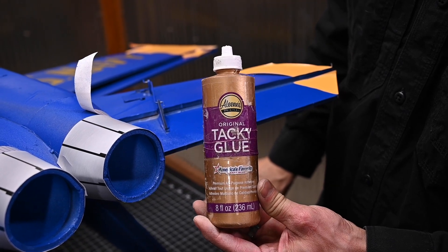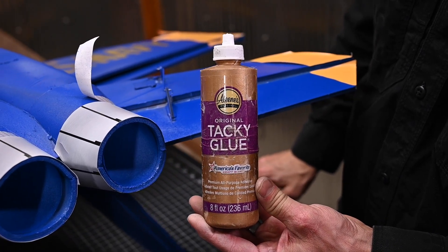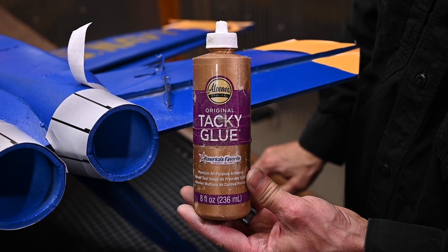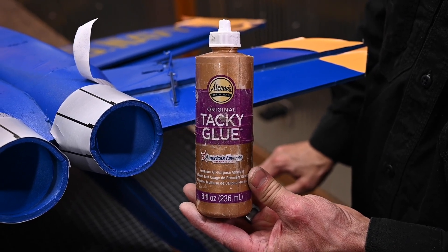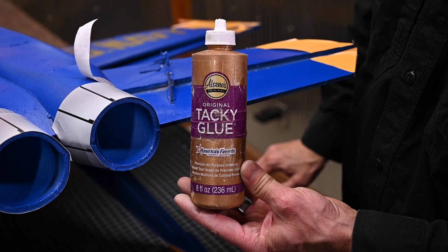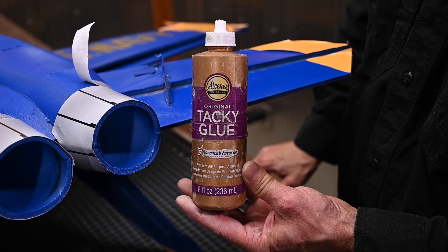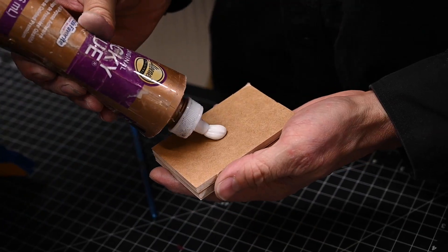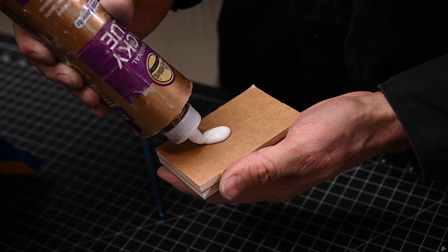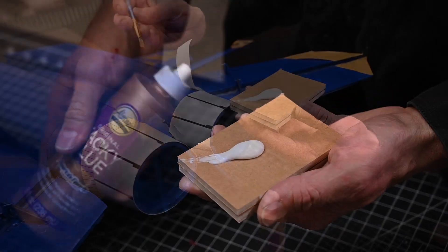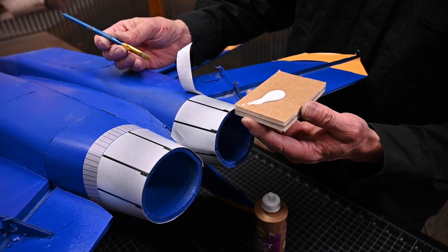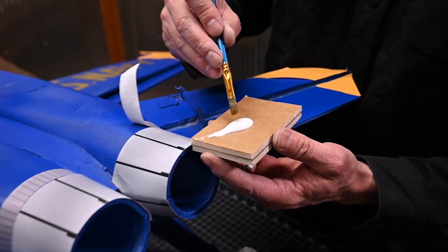Alene's Tacky Glue is one of my favorite glues. It's available everywhere at craft stores or you can get it off Amazon. I've had this bottle for ages. One bottle will last a very long time. To apply the glue, I'm first going to squeeze some out on a piece of scrap.